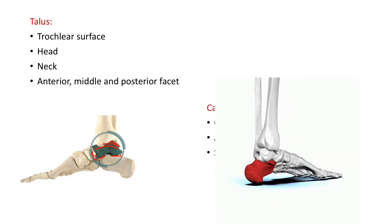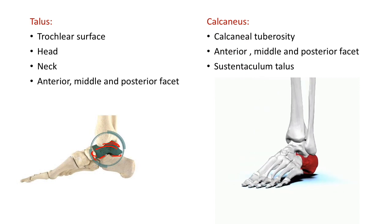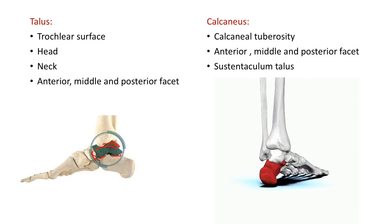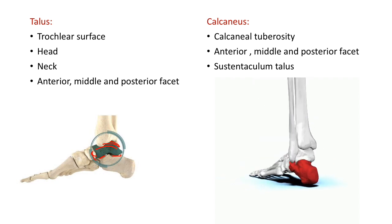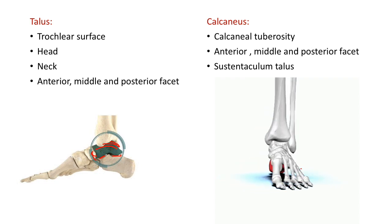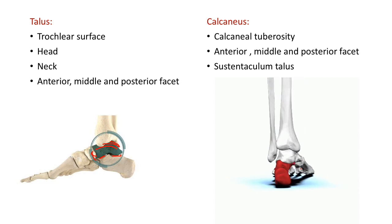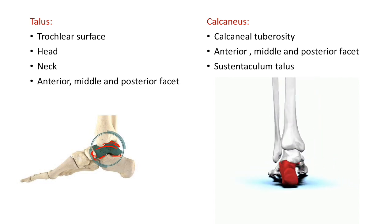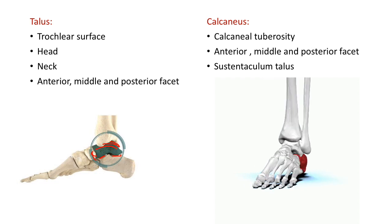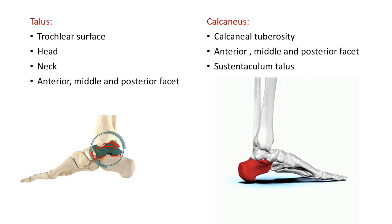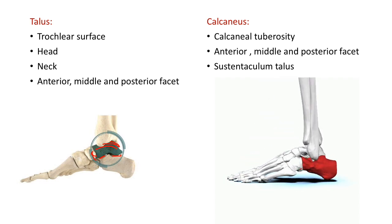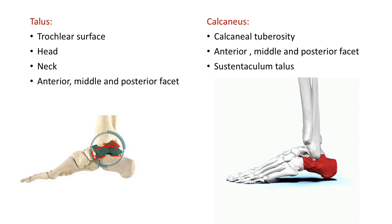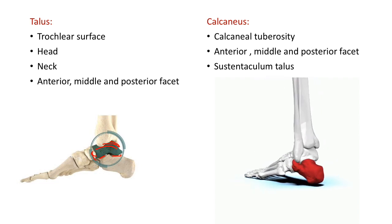The next bone is the calcaneus. It has a calcaneal tuberosity important for the attachment of the Achilles tendon, which is the elongation of the gastrosoleus muscle. The calcaneus also has anterior, middle, and posterior facets situated on its superior surface. These facets articulate with the corresponding anterior, middle, and posterior facets of the talus — the talus facets are situated inferiorly while the calcaneum facets are superiorly — forming the subtalar joint. The calcaneus also has a prominent projection called the sustentaculum tali.